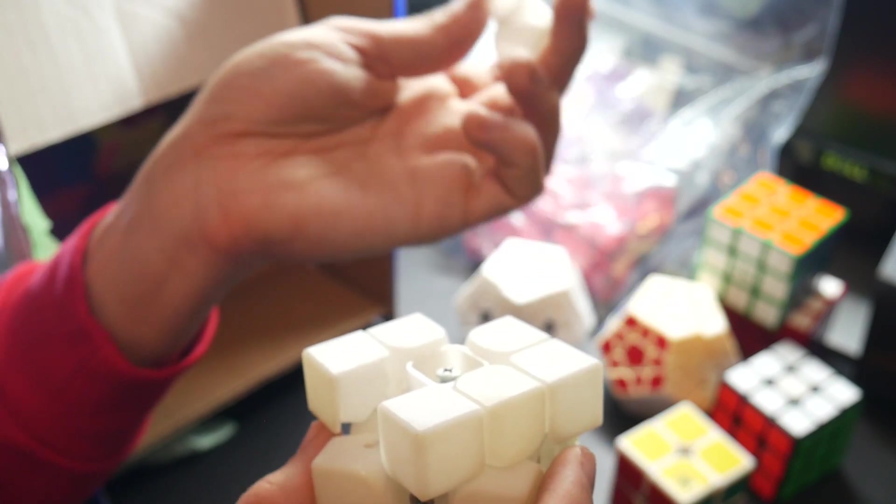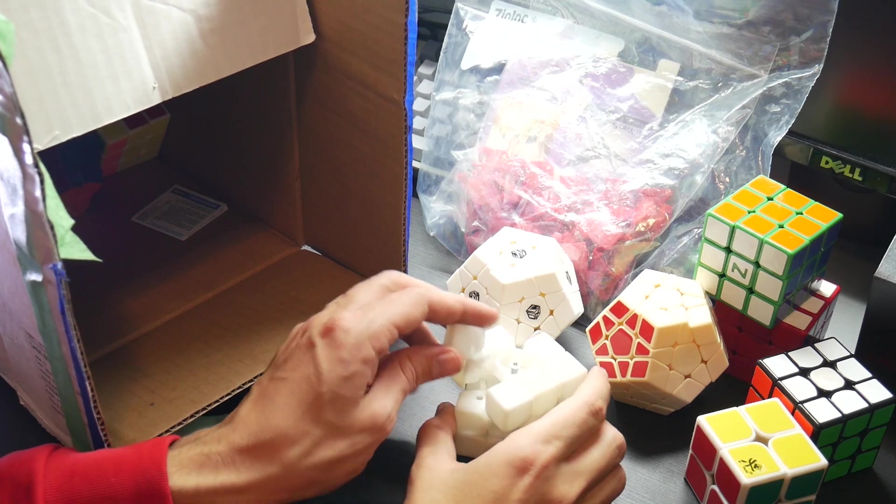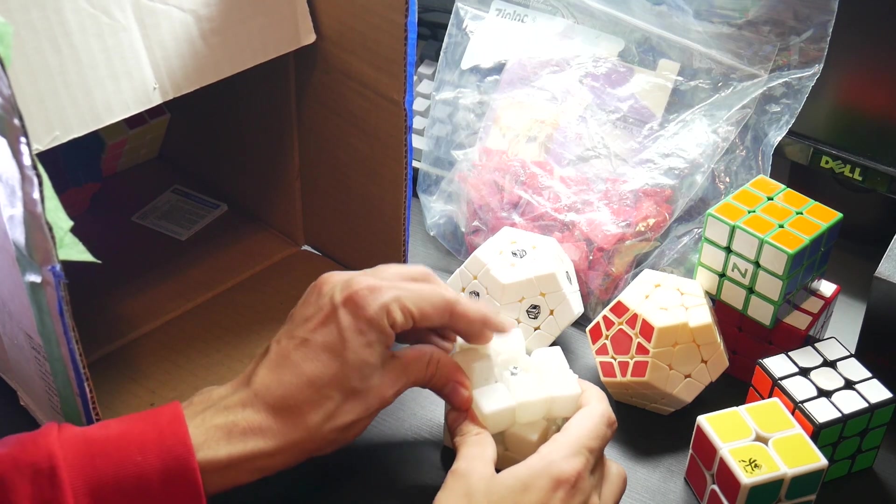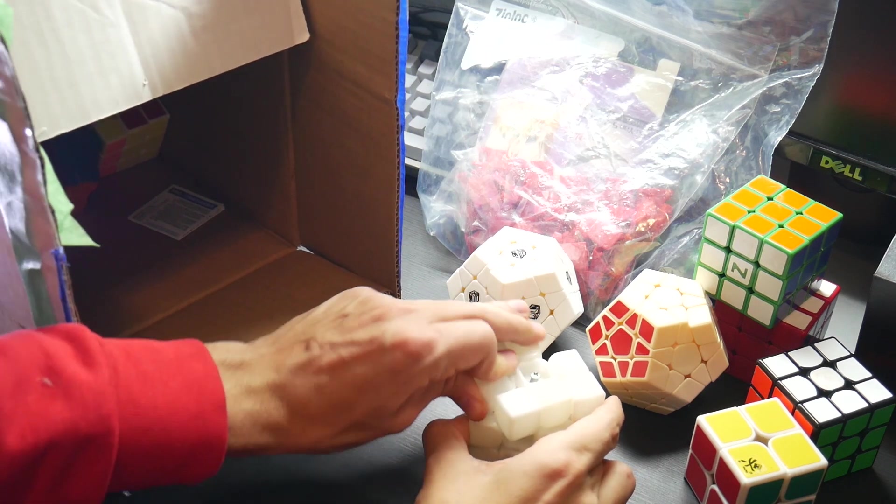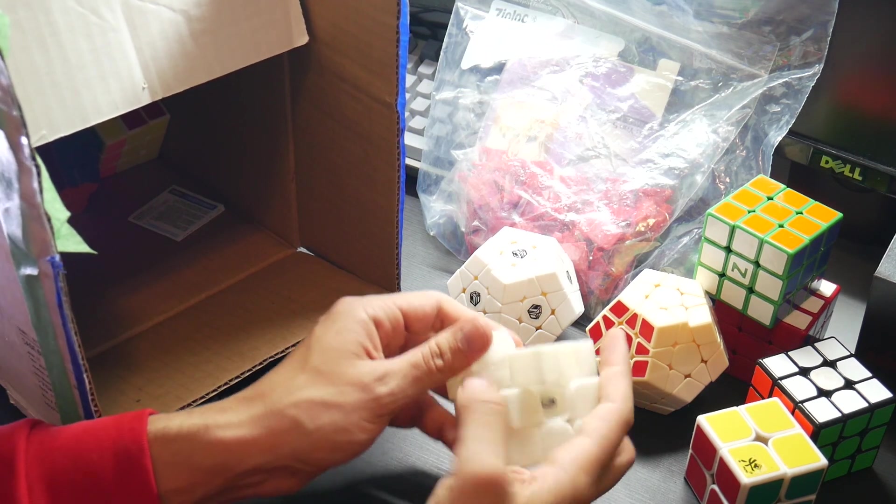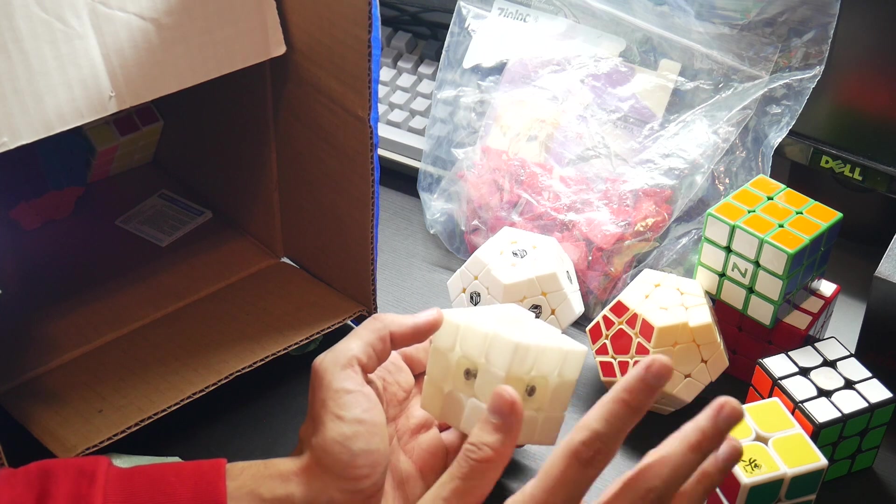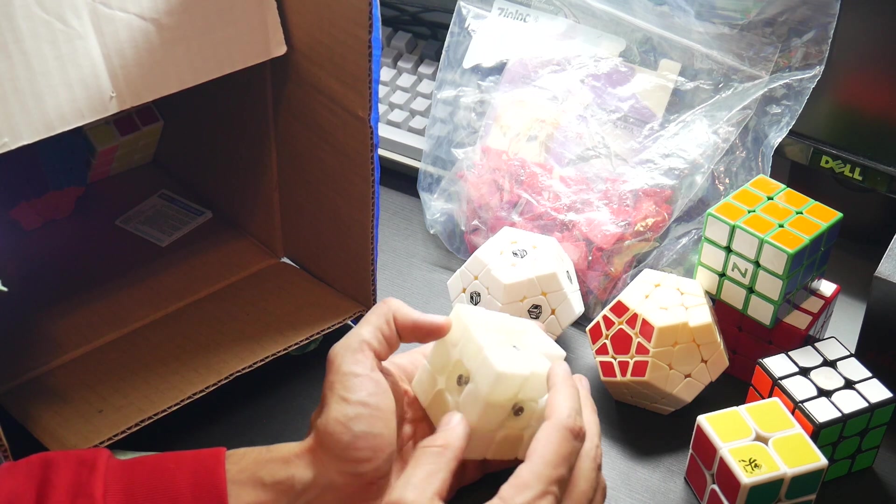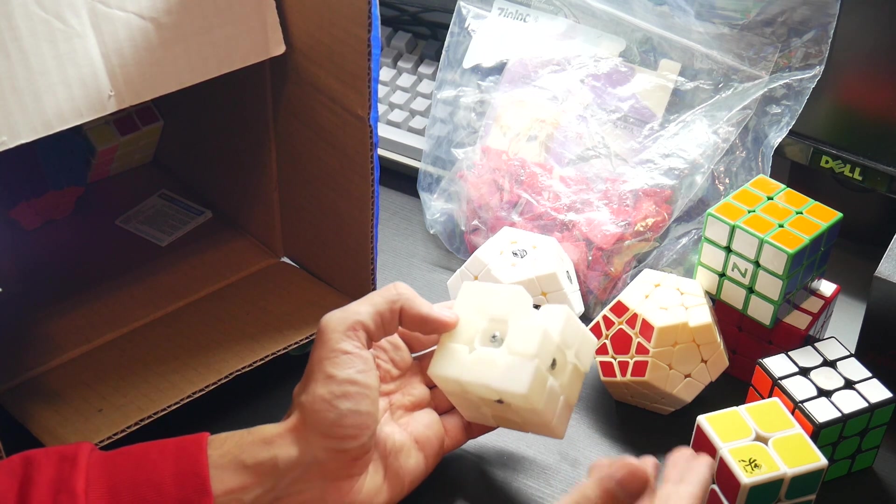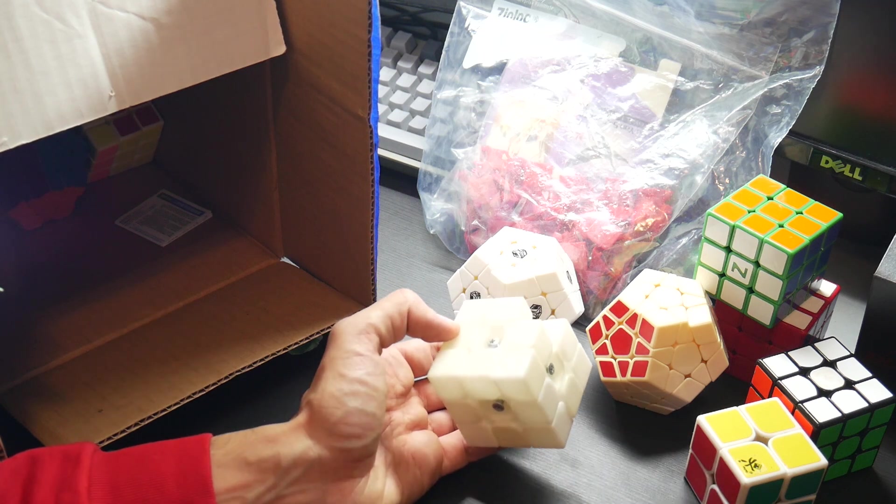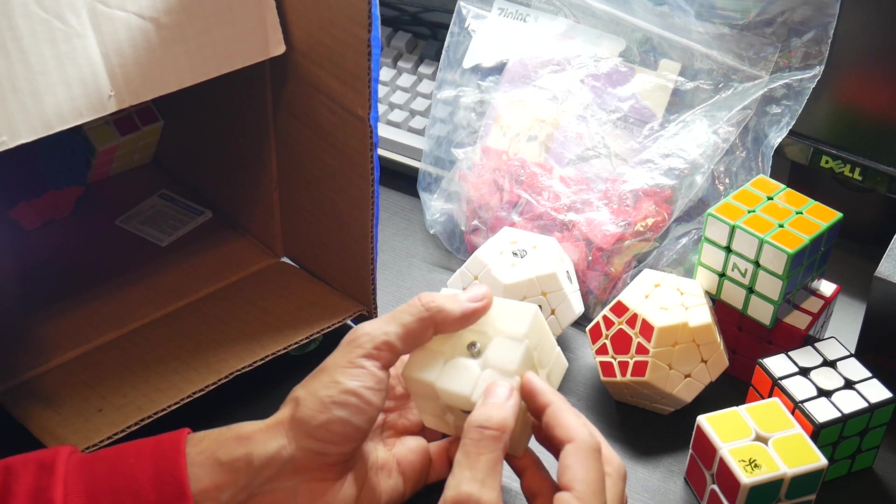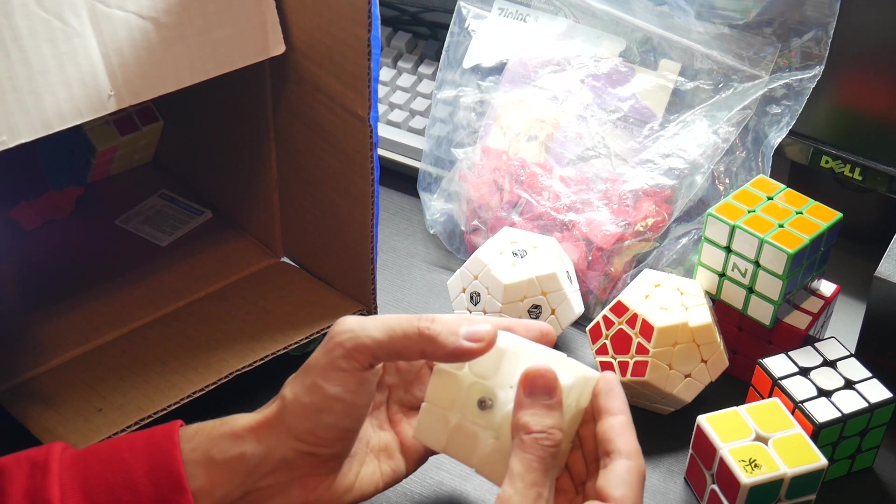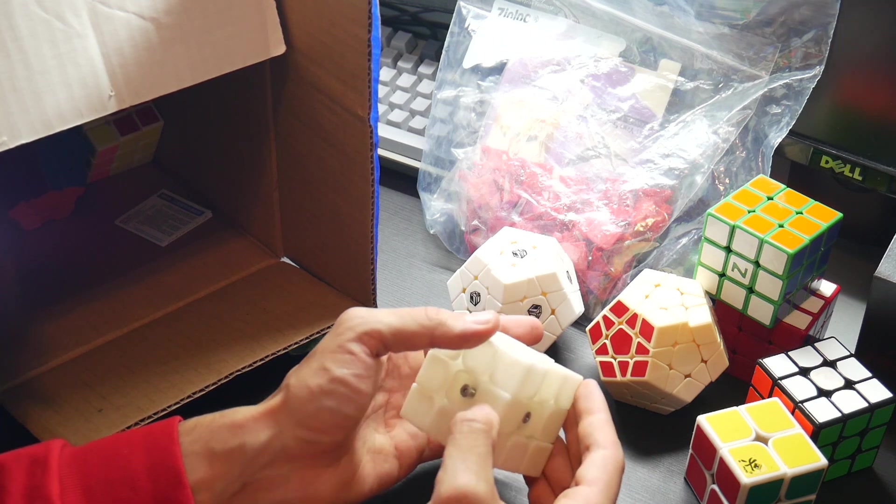You might get like three sets of center caps and each of them are varying in strength, and then you could basically just swap out the center caps whenever you wanted to increase the strength. But anyways, this was before manufacturers started magnetizing puzzles on their own. It was so expensive because it had to be resin 3D printed.